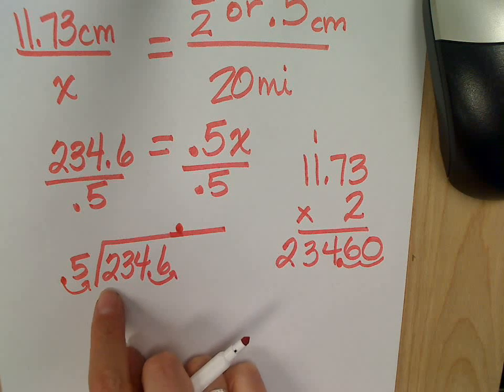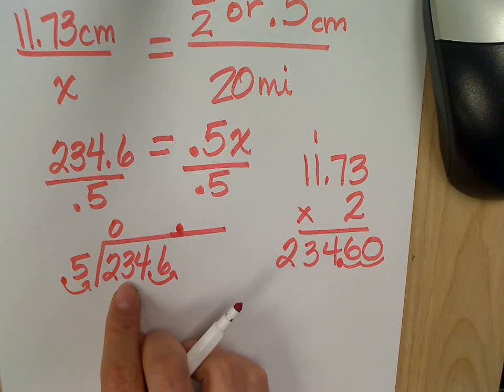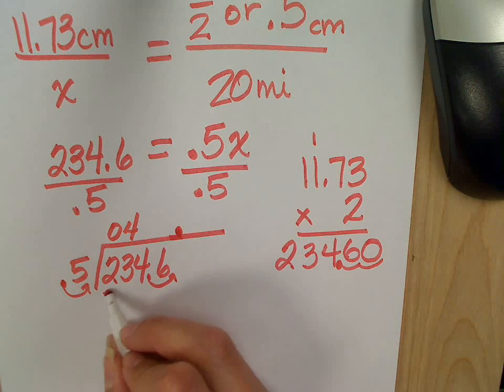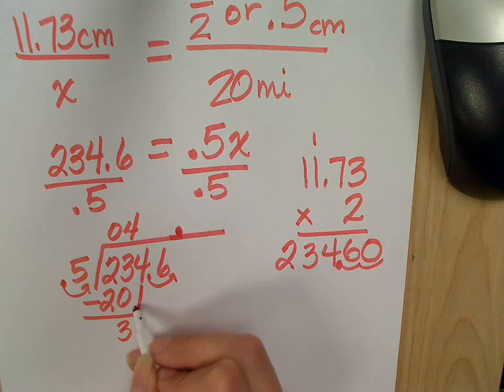Keep everything nice and lined up. 5 goes into 2 how many times? 0. Good. 5 into 23? 4. 4 times. 5 times 4 is? 20. 23 minus 20 is 3. Bring down my 4.